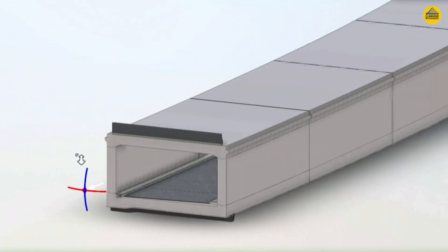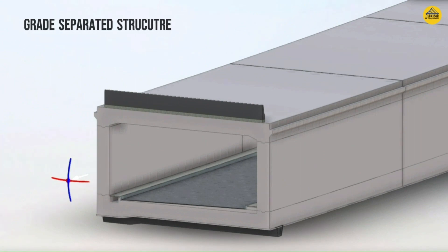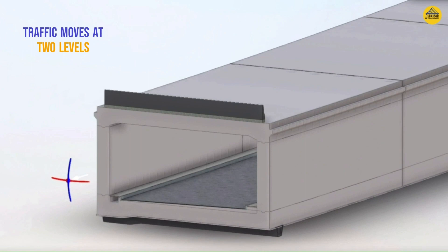On your screen is a particular example of a single cell grade separated structure. These structures can be of box shape and here we will be discussing one of the same. Traffic moves at multiple levels in such structures, and in this case the traffic is moving on the top of the box as well as inside the box.